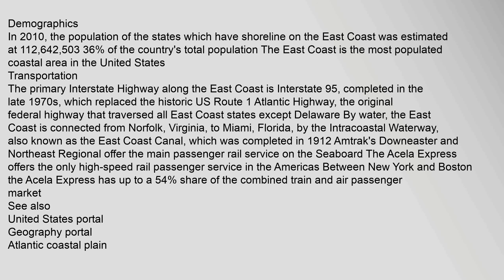Amtrak's Downeaster and Northeast Regional offer the main passenger rail service on the seaboard. The Acela Express offers the only high-speed rail passenger service in the Americas, between New York and Boston, and has up to a 54% share of the combined train and air passenger market.